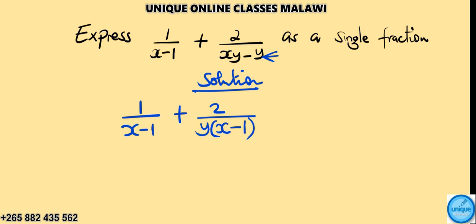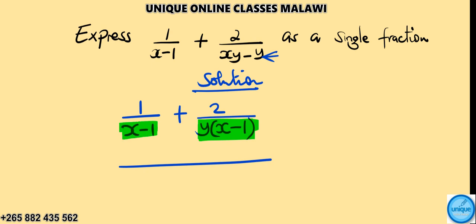If we factor out y, that's 1. Then let's find the common denominator here. The expression is going to be x minus 1, so I'm dropping down y, then x minus 1.